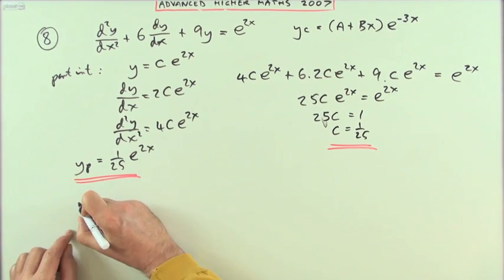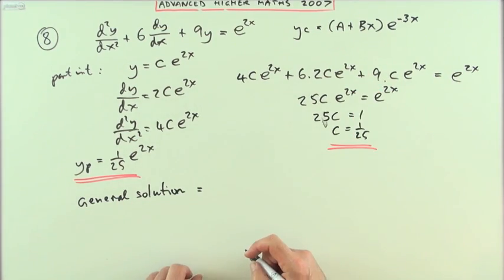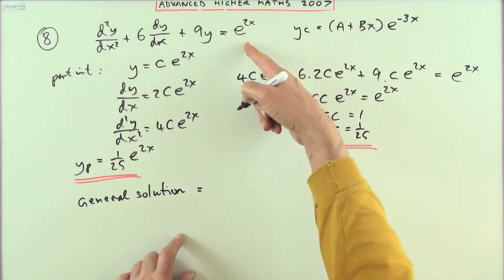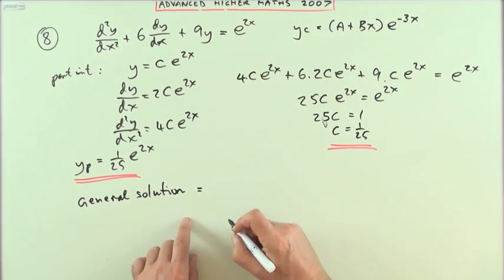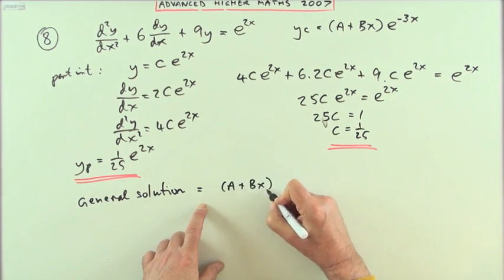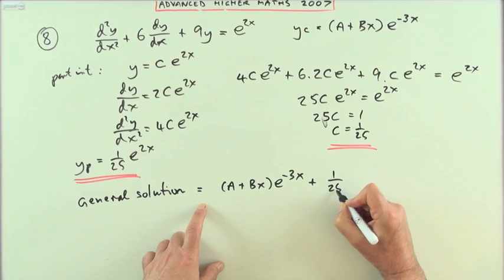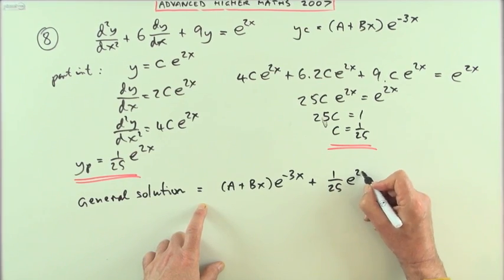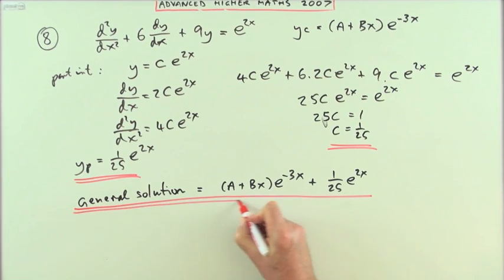Finally, the general solution will be the sum of those two. If I put this in I'll get zero; if I put this in I'll get e^(2x). Together they'll give e^(2x). The general solution will be y = (a + bx)e^(-3x) + 1/25·e^(2x). It's just as well I'm watching because you've forgotten to write 'y equals'!